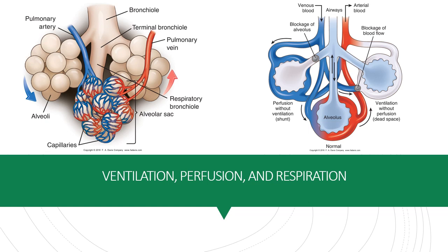If there is a mismatch of ventilation and perfusion, we have two options. We can either have perfusion without ventilation, such as the blockage or damage to an alveolus, and blood will go by but be unable to pick up oxygen. Or we can have ventilation without perfusion, such as in the case of a PE or some sort of poor perfusion or shock — air can go in and out, but blood does not go by.